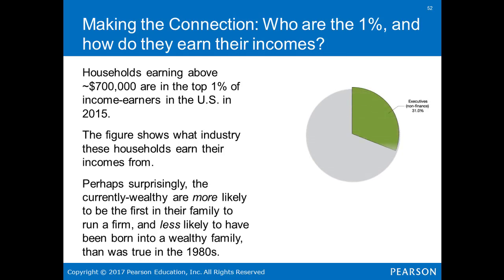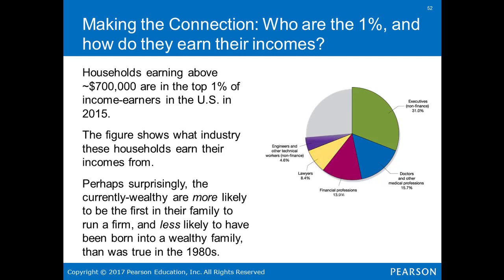Who are the 1%? Households earning above $700,000 are considered the top 1% of income earners in the United States. Perhaps surprisingly, the current wealthy are more likely to be the first in their family to run a firm and less likely to have been born into wealth than was true in the 1980s. The breakdown by industry: 31% come from non-finance executives; 15.7% from doctors and medical professions; 13.9% from financial professionals; 8.4% from lawyers; 4.6% from engineers and technical workers; 1.6% from arts, media, and sports; and 24.8% other.